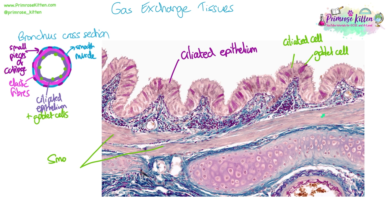Underneath the ciliated epithelium is a layer of smooth muscle running all the way down, with those elongated flattened cells typical of smooth muscle structure. The large section beneath is cartilage — there is a piece of cartilage, then a gap, then another piece of cartilage, consistent with small irregular pieces of cartilage around the edge of the bronchus. You can see the fibroblast cells within the cartilage structure.